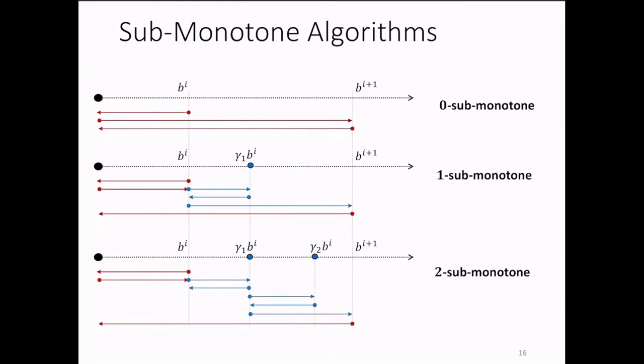And finally, at the bottom you see an example of a two sub-monotone algorithm which has two detours in between the basic turning points. Intuitively, its detour gives rise to a zigzag type trajectory that visits parts within the basic the backbone turning points multiple times. Also, it should be clear that the higher the number of detours the more the algorithm deviates in some sense from being monotone.